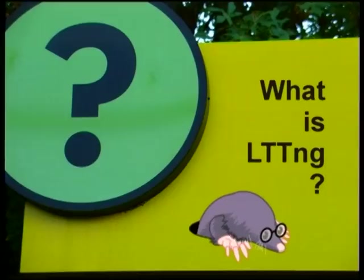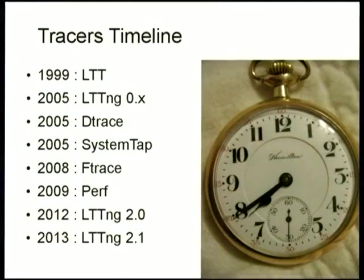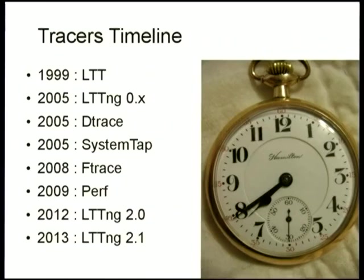Where does LTTNG fit among the available tracing tools? LTTNG has a long history — it started as LTT in 1999, got a major upgrade in 2005 with the first version of LTTNG (Linux Trace Toolkit Next Generation). Around that time DTrace and SystemTap appeared, and later FTrace and Perf were added to the Linux kernel. Last year we released a completely new version, LTTNG 2.0 — we skipped version 1.x entirely because it was so different — and a couple of weeks ago we released version 2.1.